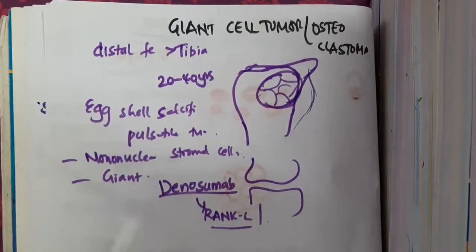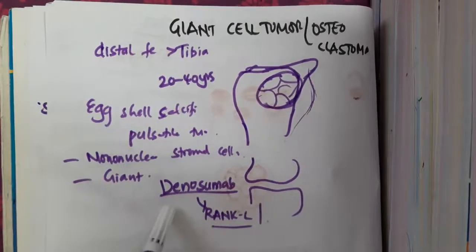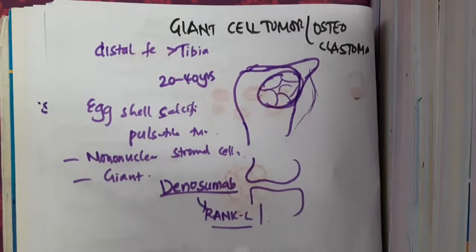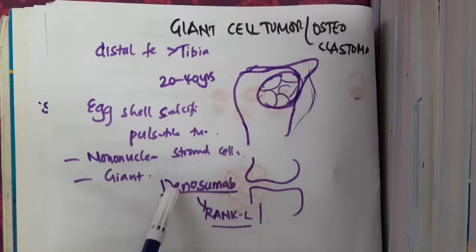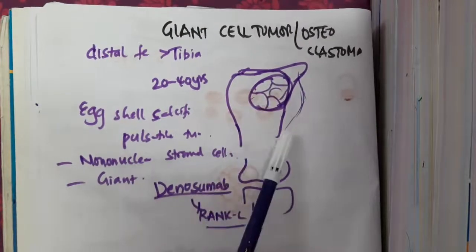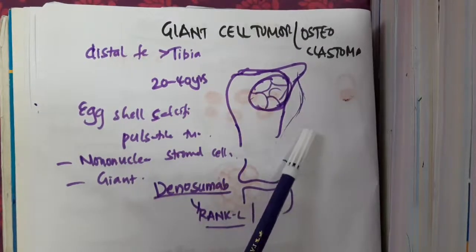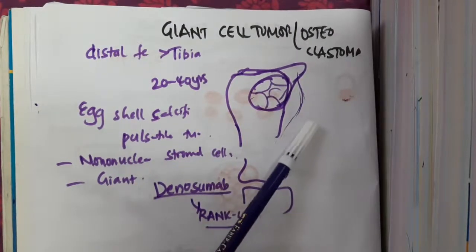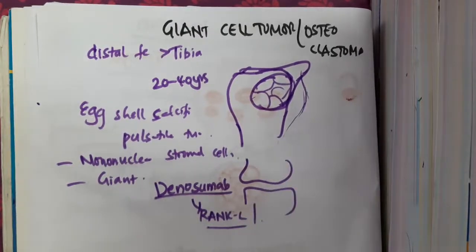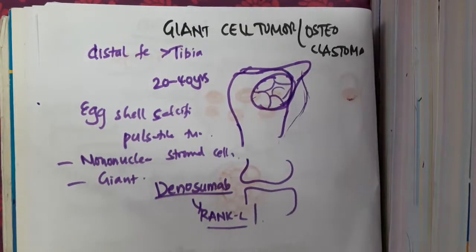Because the osteoclasts act through RANK ligand, you can give denosumab, which is a RANK ligand antagonist. Sometimes you can also do extended curettage along with bone grafting. This is about the giant cell tumor — thank you.